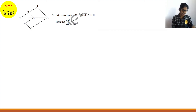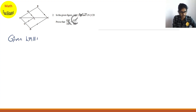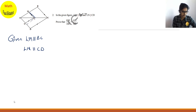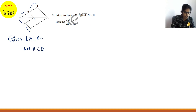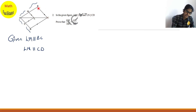Question number two: in the given figure, LM is parallel to BC and LN is parallel to CD. You have to prove that AM/AB = AN/ND. Whenever a figure is given, let us simplify it. Since LM is parallel to BC, there is one triangle — triangle ABC — with these two lines parallel.